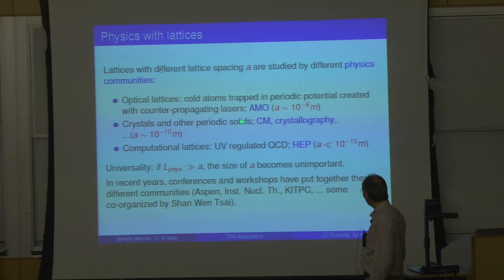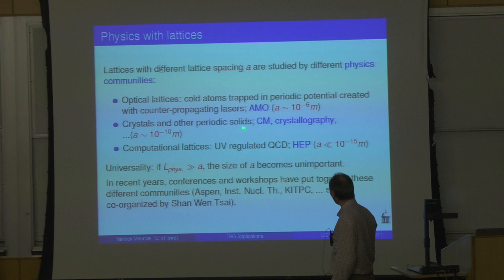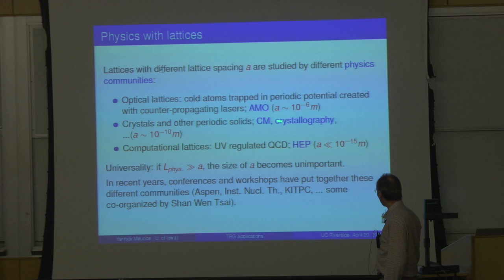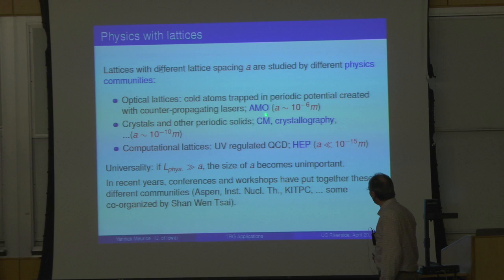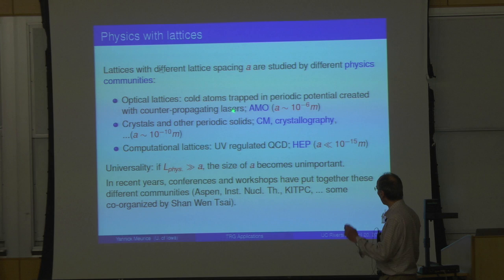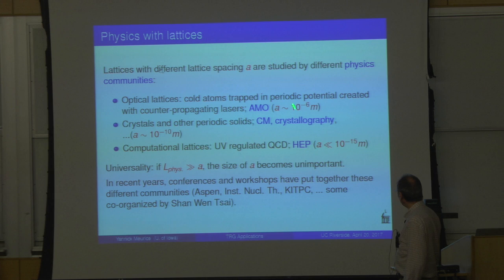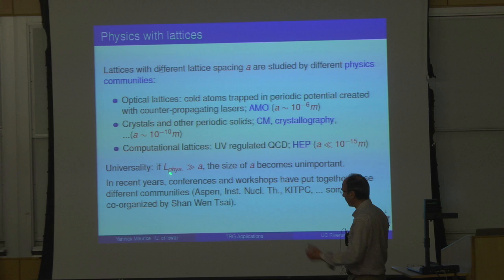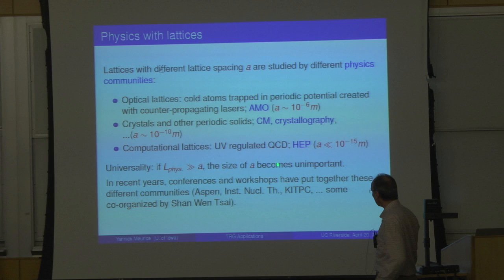If you go to the scale of one Angstrom, you have real lattices that occur naturally in the real world — a big playground for condensed matter and crystallography. More recently, people have started reconstructing lattices artificially by taking counter-propagating lasers and trapping polarizable molecules or atoms, giving a lattice spacing of the order of a micron. Despite this disparity in scales, when the correlation length is large compared to the lattice spacing, the underlying lattice becomes unimportant and the communities can talk together.